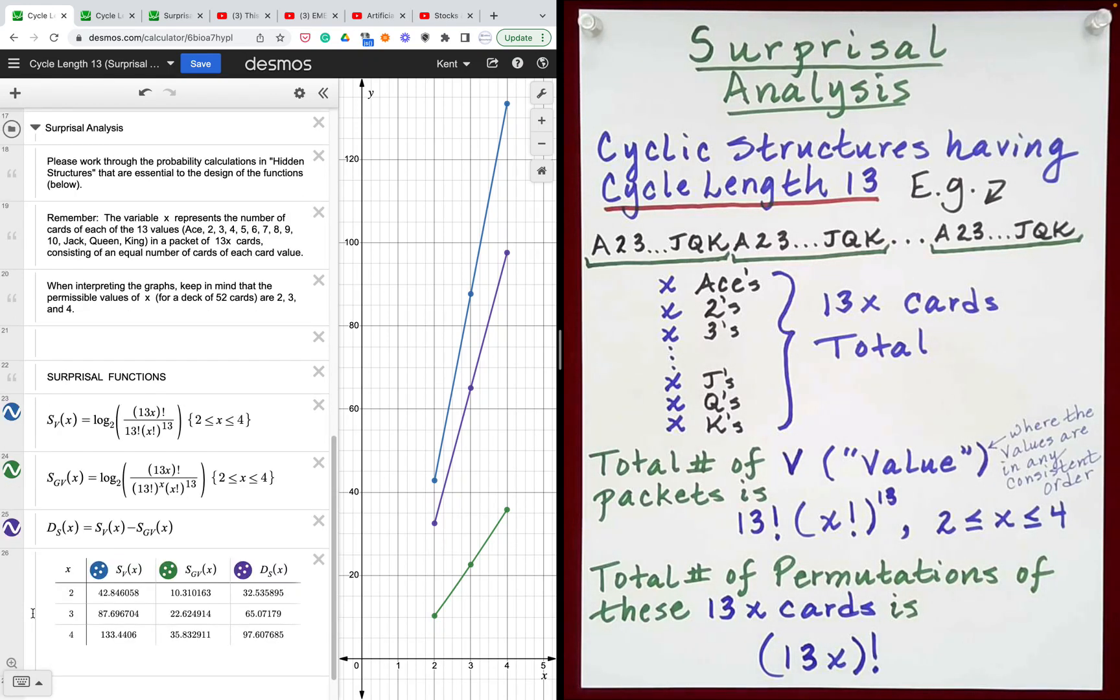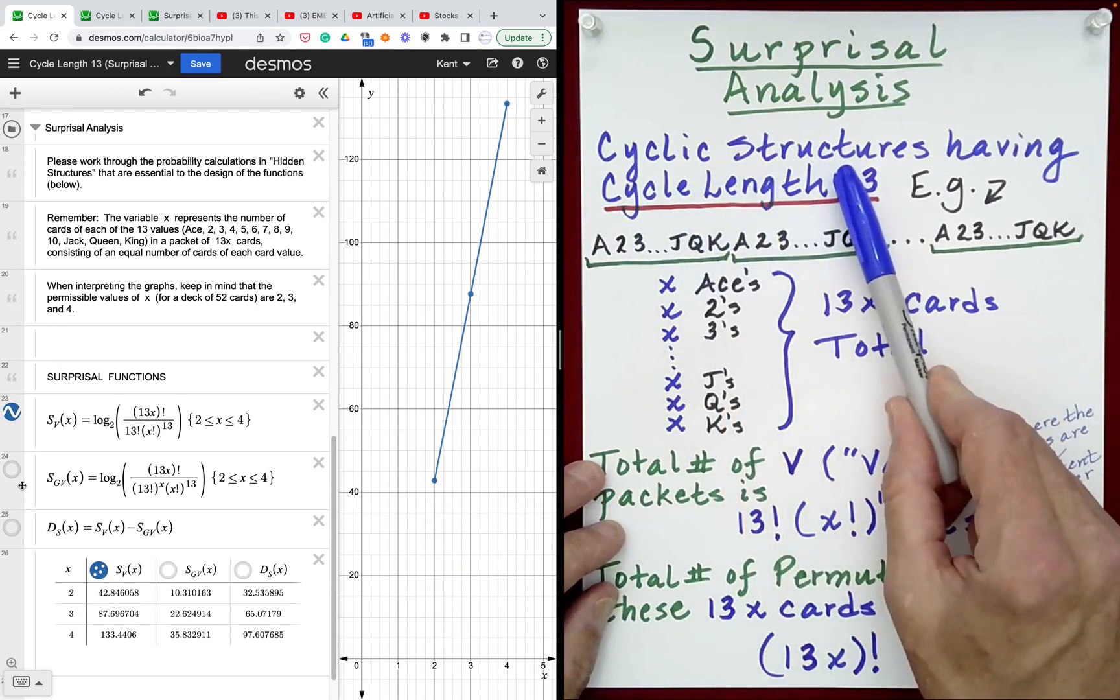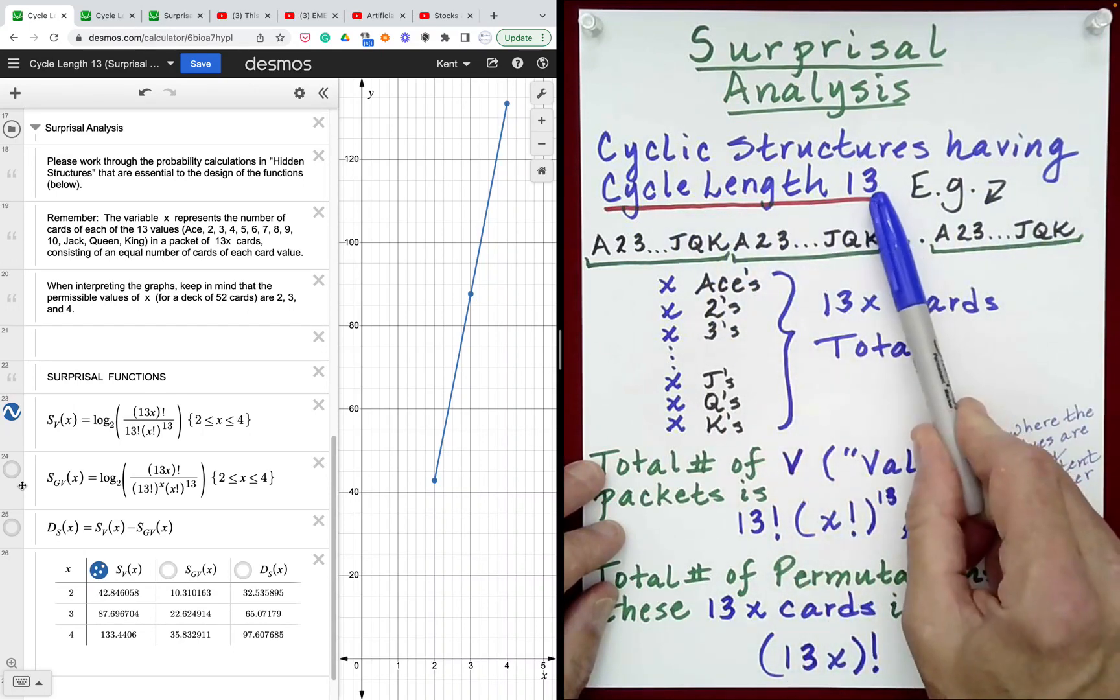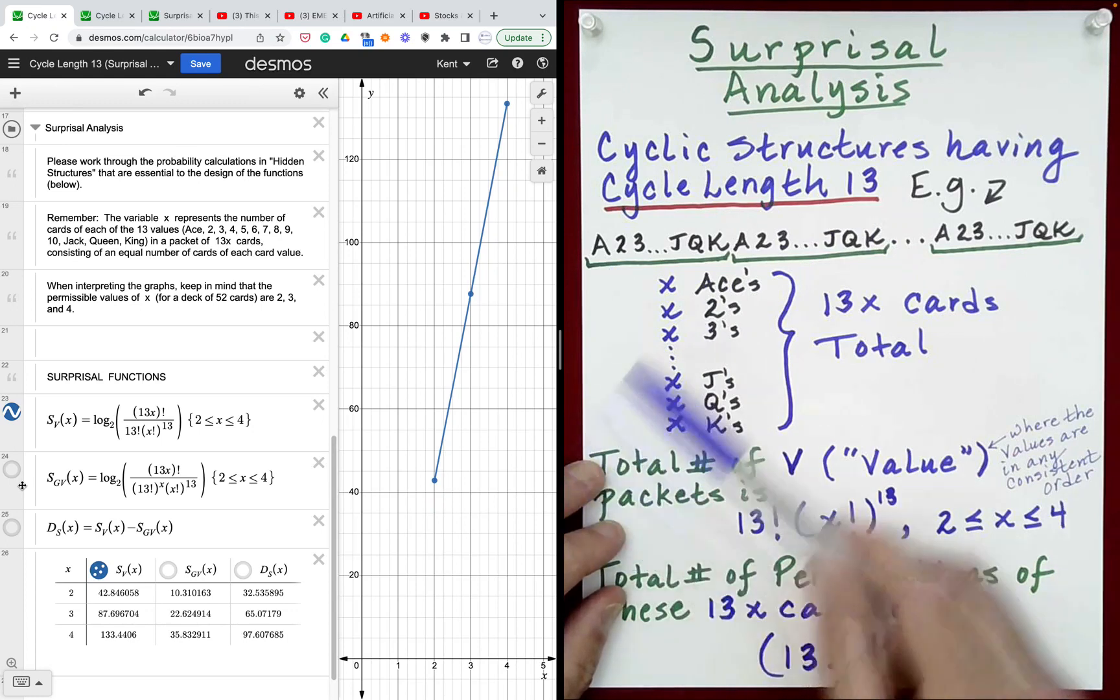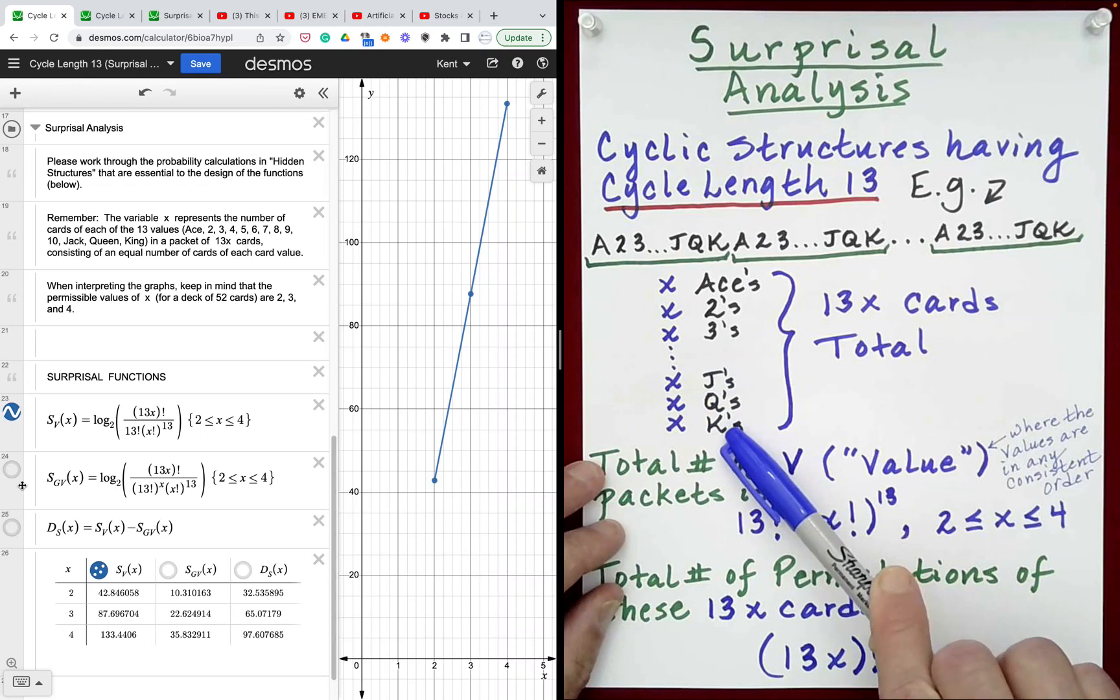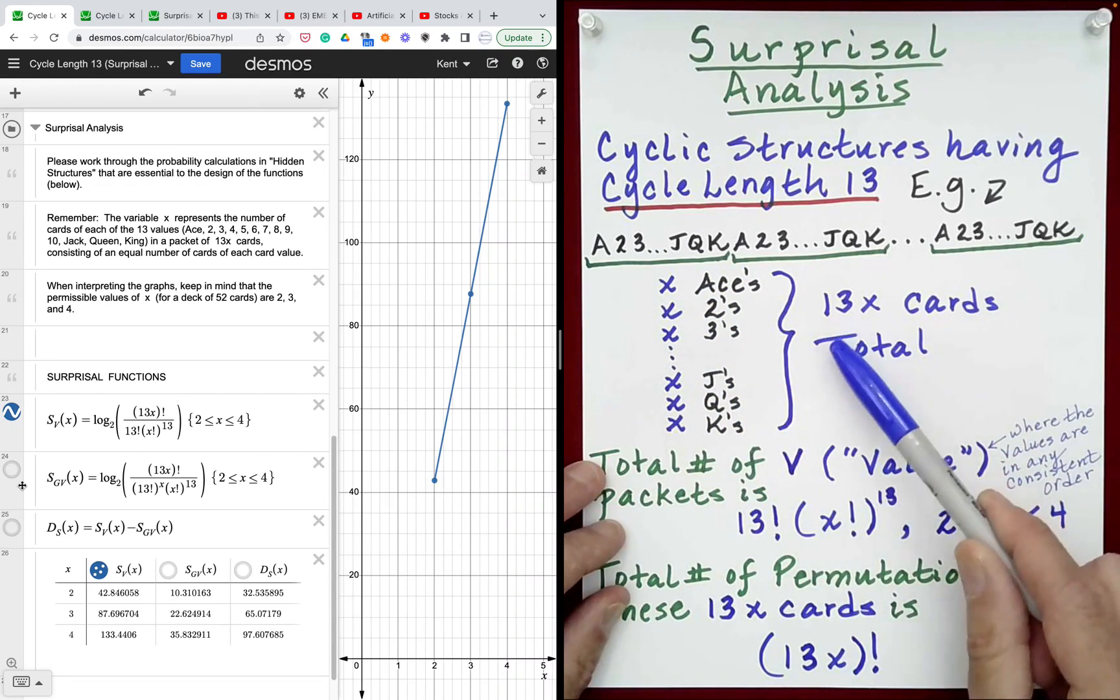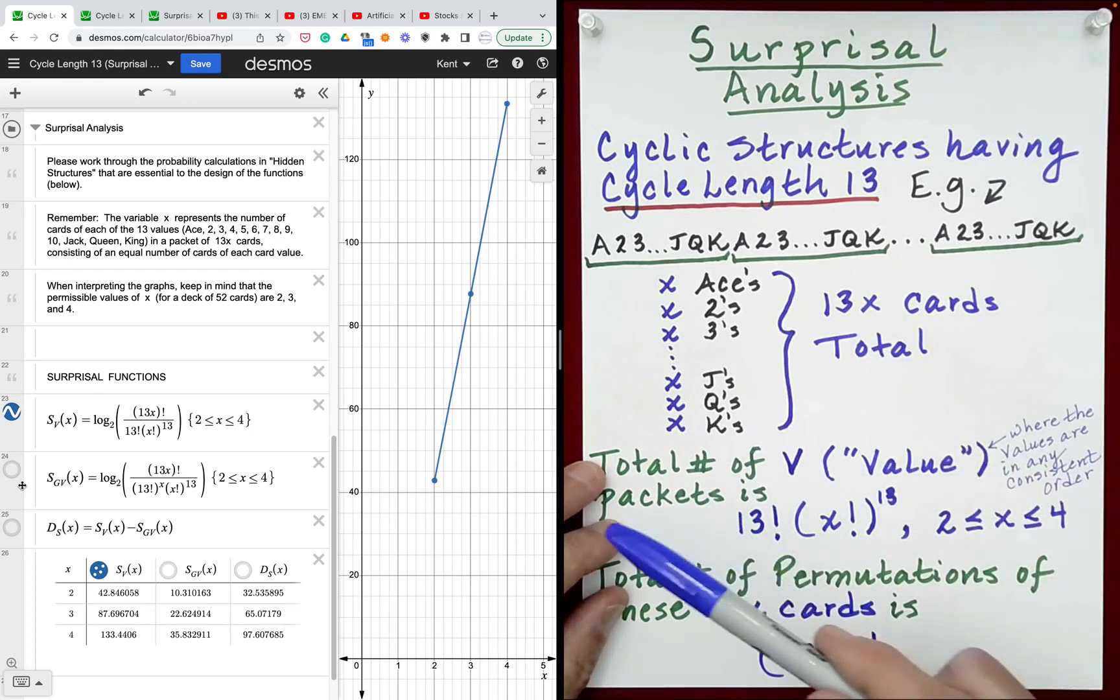Let's take a look at how the surprisal functions are built, focusing on the top one first. The core expression for our surprisal function can be constructed in the following way. Since we're looking at cyclic structures having cycle length 13, we will have an equal number of aces, twos, threes, all the way up to kings. Let that equal number be represented by the variable x. Hence, we will have a total of 13x cards.